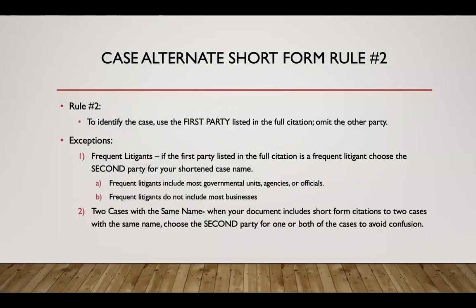Case alternate short form rule number two pertains to case names. To identify the case, use the first party listed in the full citation and omit the other party. There are two exceptions: one, frequent litigants; and two, two cases with the same name. If the first party listed is a frequent litigant, choose the second party for your shortened case name. Frequent litigants include most governmental units, agencies, or officials, but do not include most businesses. When your document includes short form citations to two cases with the same name, choose the second party for one or both cases to avoid confusion.